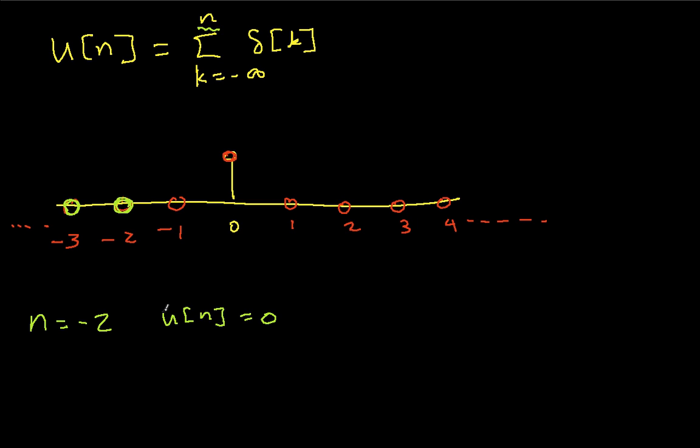For the case where n is equal to 0, then here, I basically am summing from minus infinity up to 0. And so all of these terms out here summed to 0, but then at 0, I have a 1. And so u of 0 is 1, because I've got all of these terms which summed to 0, and then this term here.